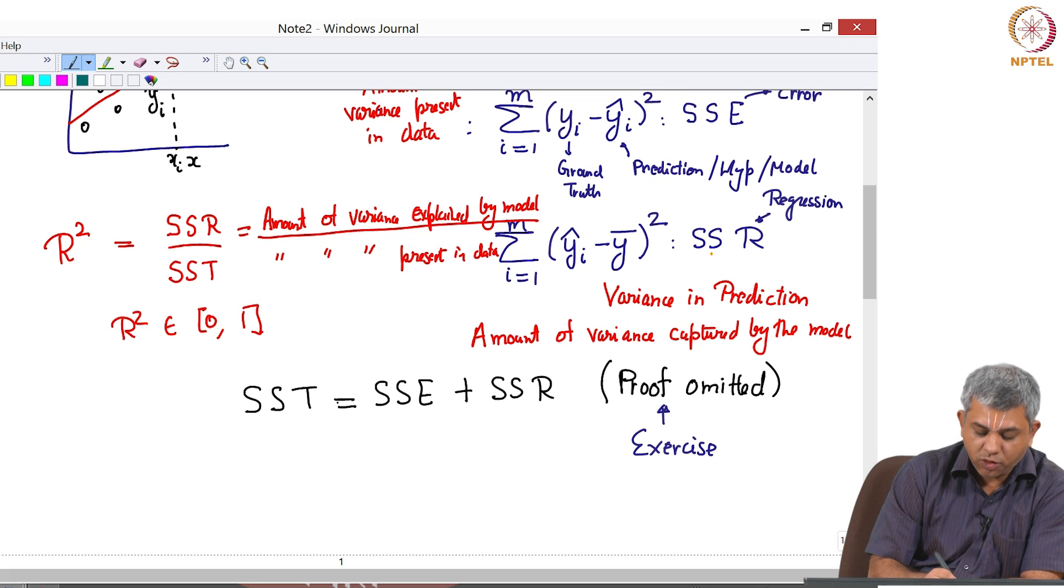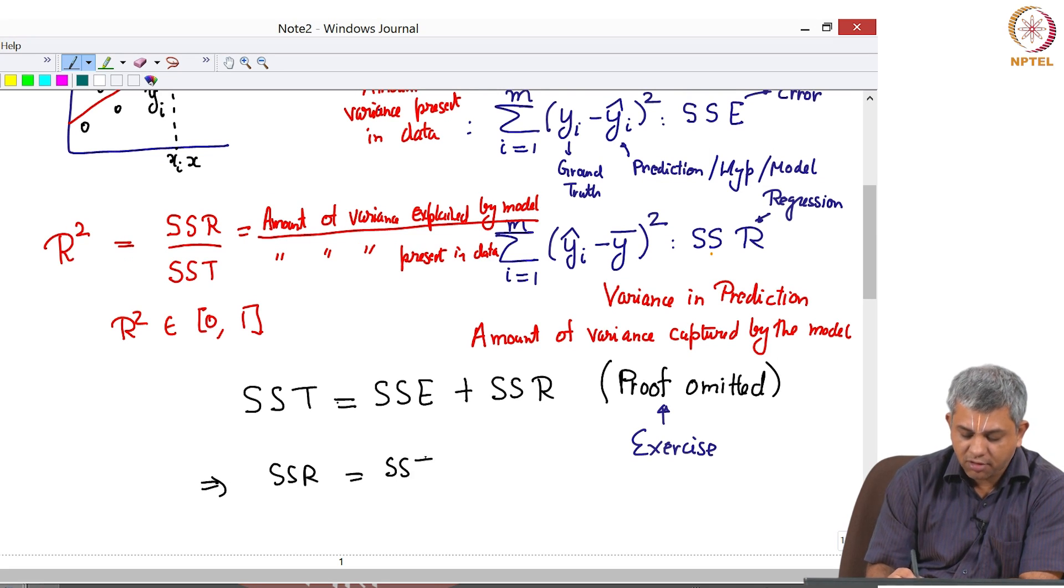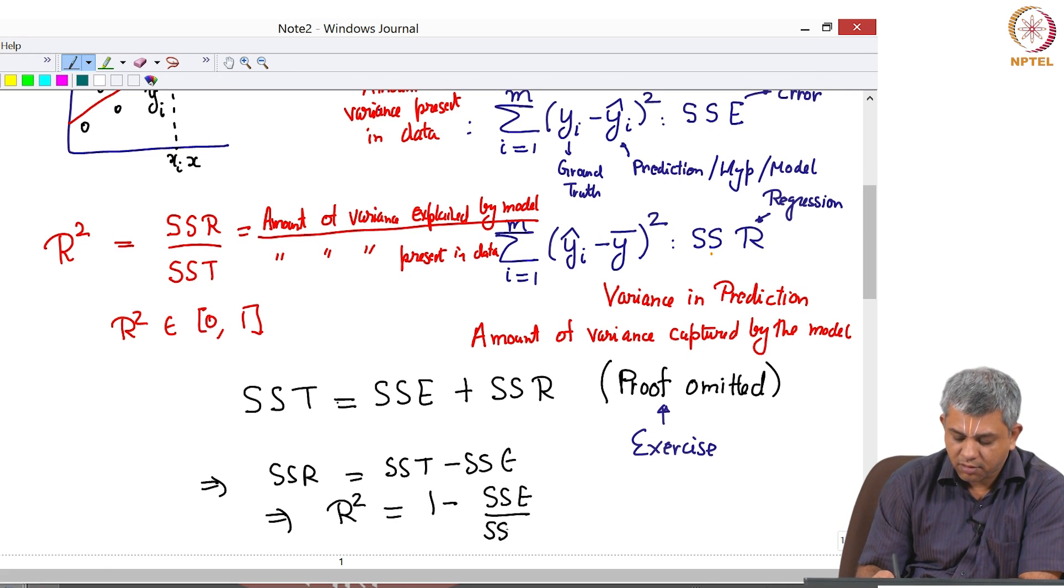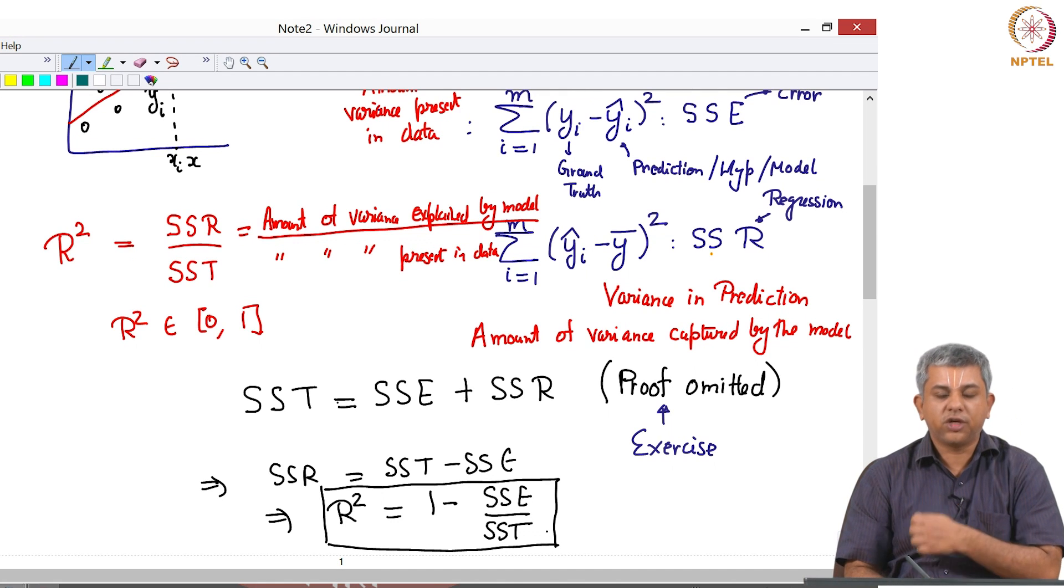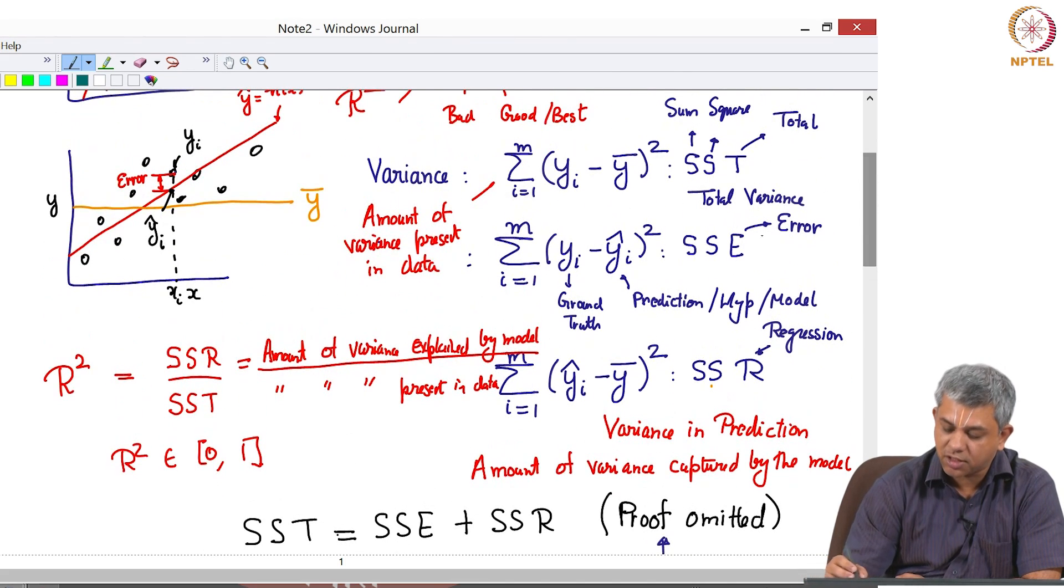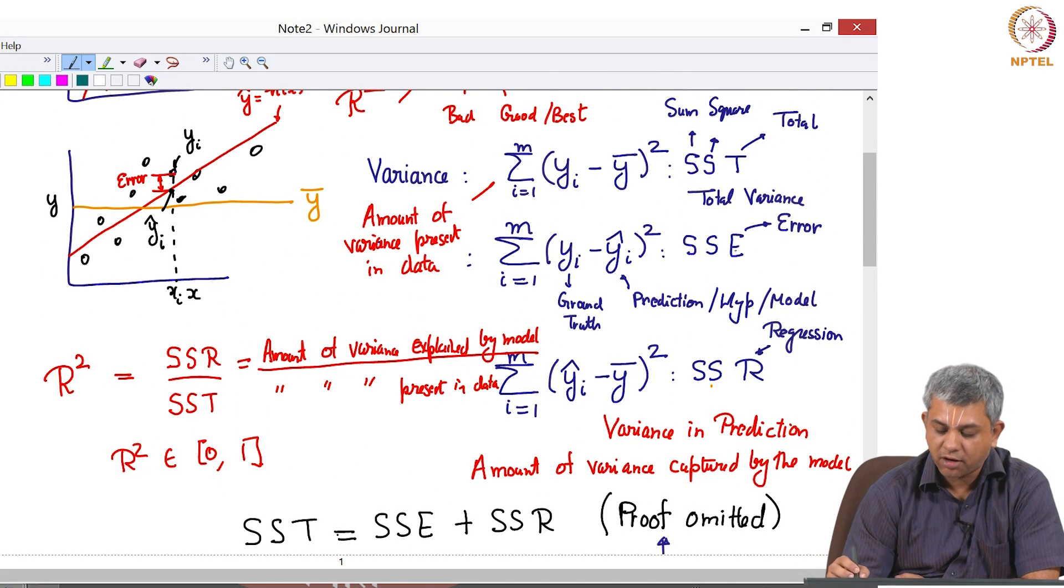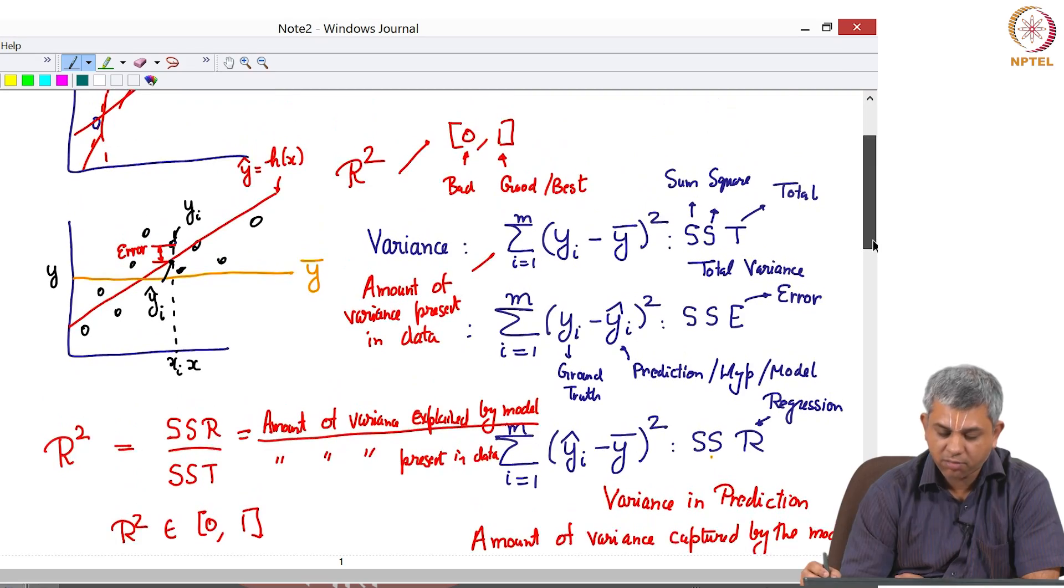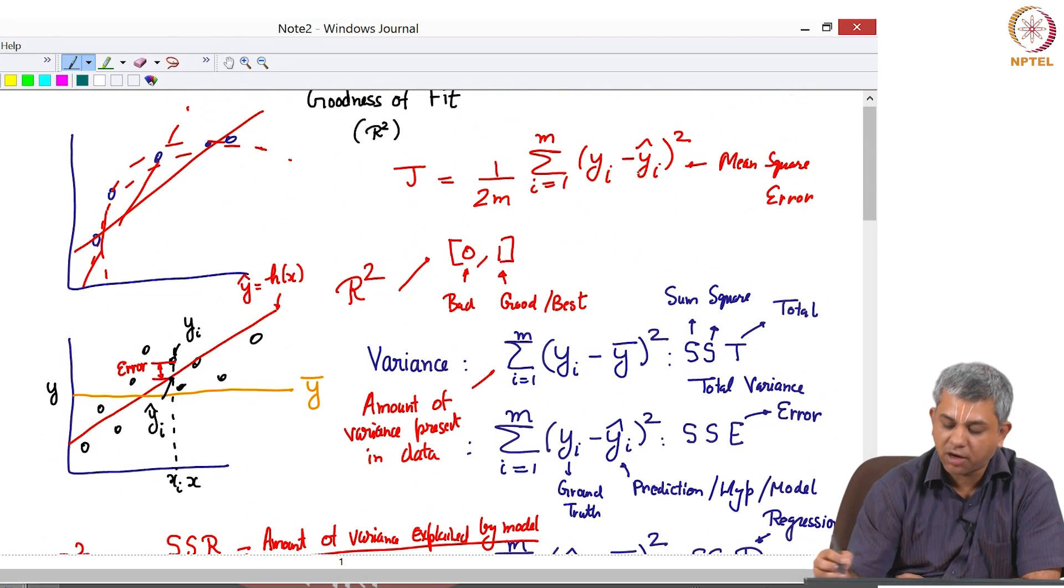Obviously you can use this to realize that SSR is equal to SST minus SSE, which gives you that R square is the same as 1 minus SSE by SST. This is usually the form in which it is implemented because we are anyway calculating this term, the sum total error or the square sum error, because that is really just the non-scaled part of J.